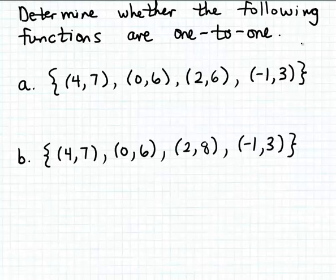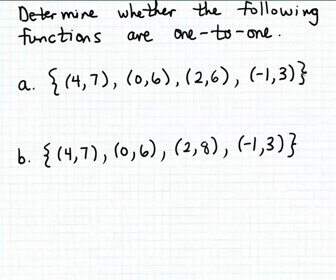If we look at the function expressed in part A, notice this function is not going to be one-to-one because there are two different inputs — namely 0 and 2 — that match the same output, 6. So it's not the case that different inputs always match different outputs in this function. This set of ordered pairs in part A is a function, but it just doesn't happen to be a one-to-one function.